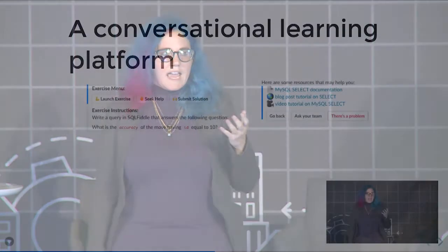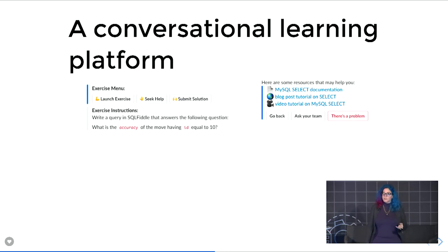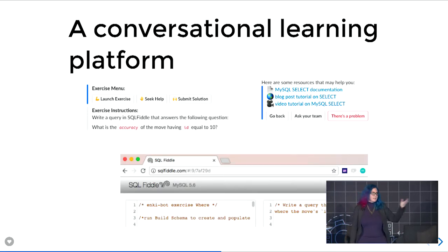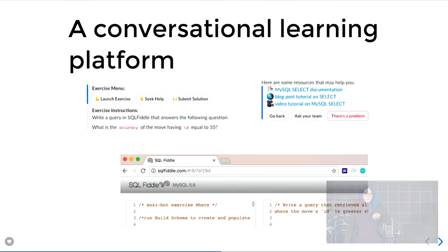By integrating with Slack and creating a conversational learning platform, we were able to link out to documentation and external resources. We were able to bring in learning content from all around the web and deliver it in that short daily format that Enki is already really good at. With Slack apps, we are freer to be more collaborative. We can integrate with platforms that already exist and keep users within the ecosystem, because users will return to Slack when they are done interacting. The thing that Slack allows you to do is drive traffic rather than just consuming traffic.